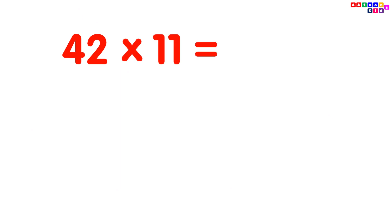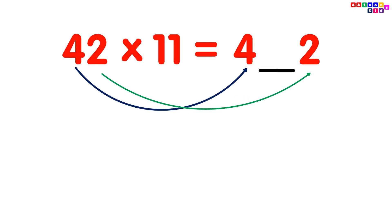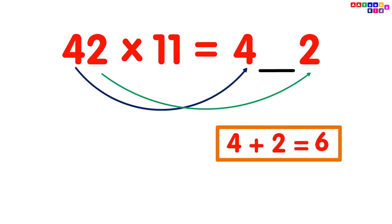42 multiplied by 11. Simply write the digits 4 and 2. Then add the digits: 4 plus 2 equals 6. Put the 6 between digits 4 and 2, and you will get your answer 462.